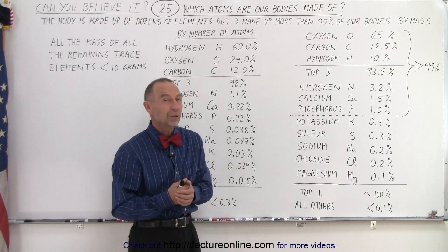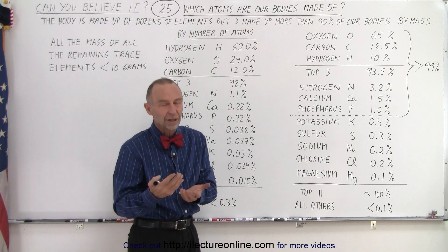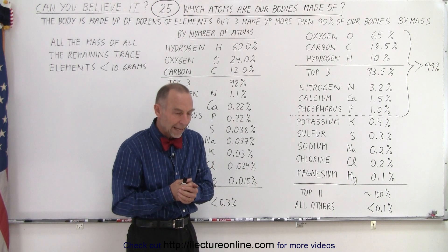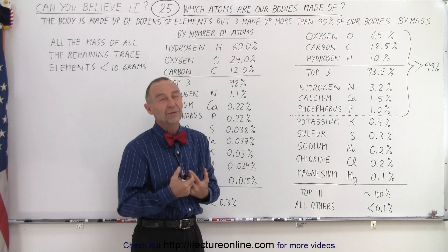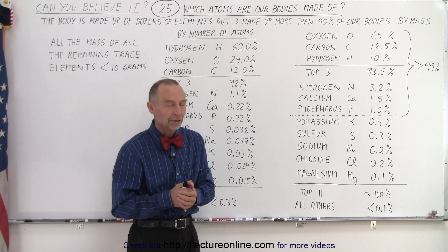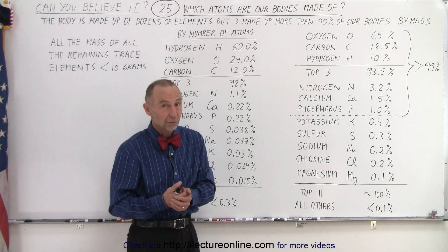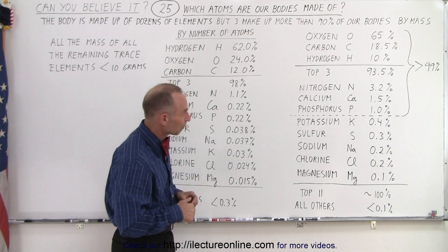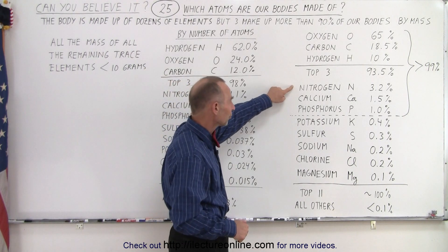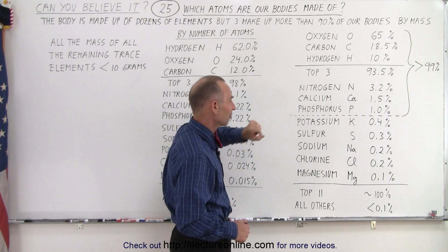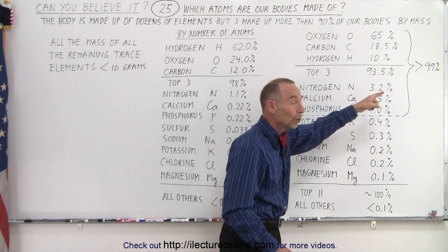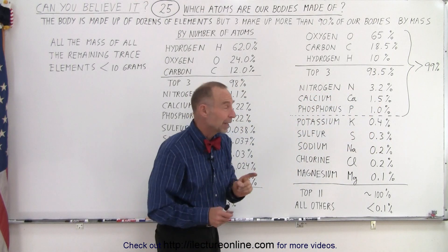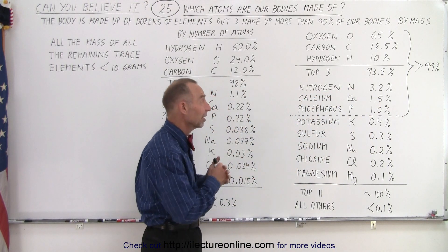If we're missing any one of those, we simply couldn't live. And then there's a number of trace elements, dozens and dozens of them. And at least a dozen of those are absolutely essential for human life as well. And it's probably way more than a dozen. Without them again, we would not do very well. So let's take a look. The next three are nitrogen, calcium, and phosphorus. And if you add those first six together, more than 99% of our bodies are made up of just those first six elements.